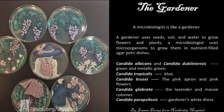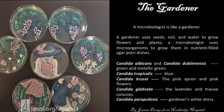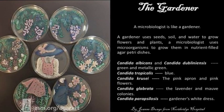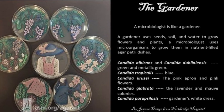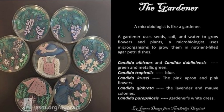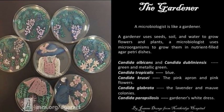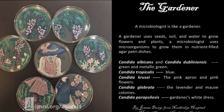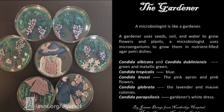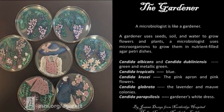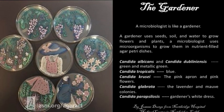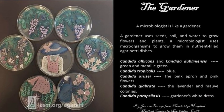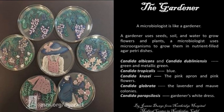The Gardener. It was once said, a microbiologist is like a gardener. A gardener uses seeds, soil and water to grow flowers and plants. A microbiologist uses microorganisms to grow them in nutrient-filled Agar dishes. And just like a garden showcases a variety of flowers, Chromogenic Agar displays a colorful variety of colonies.